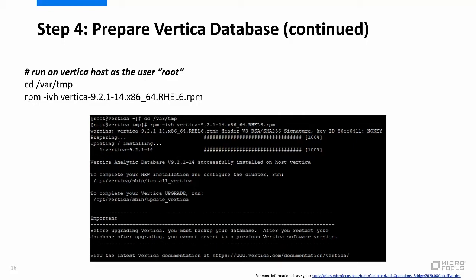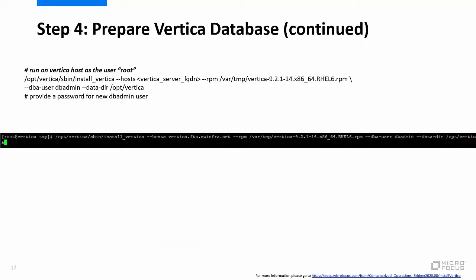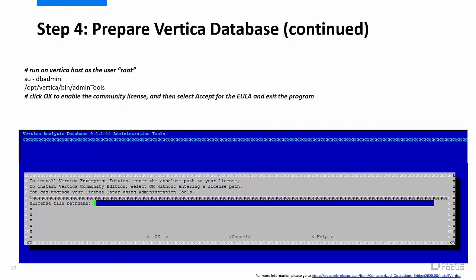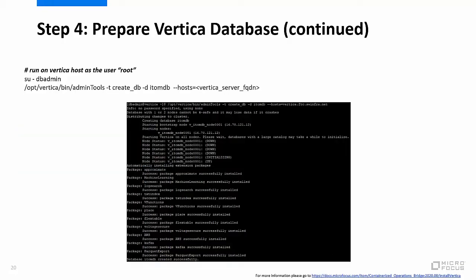Next, install the Vertica package using the commands displayed on your screen. Then, run the Install Vertica command as shown on your screen. Next, update the TZ data package using the commands displayed on your screen. Next, run the Admin Tools program to enable the Community License as shown on your screen. Next, switch to the DB Admin user, then create the ITOMDB database within Vertica as shown on your screen.